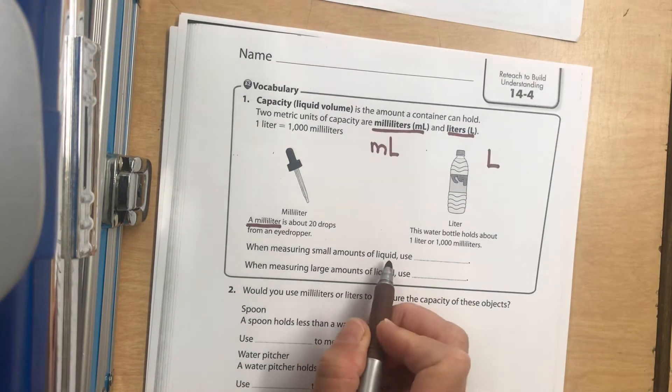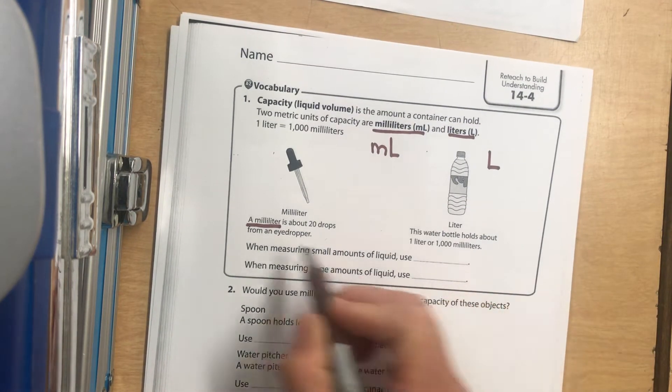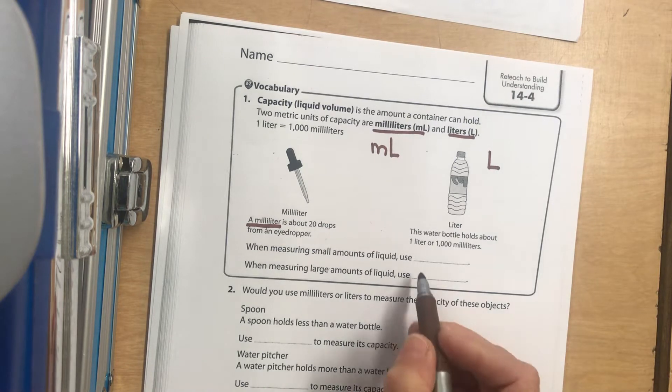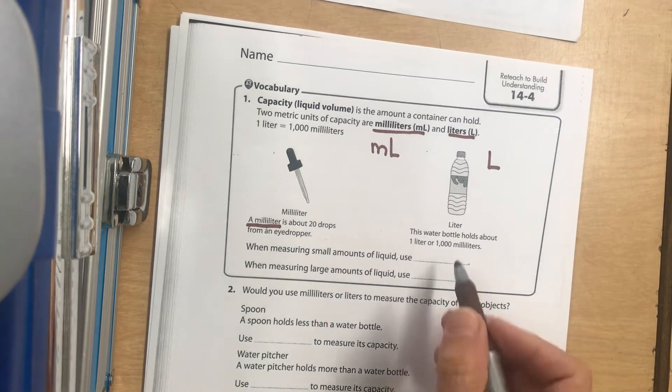So if measuring small amounts of liquid, would you use a milliliter or a liter? Like if you were trying to measure out the amount of cough syrup to take or the amount of drops to put in your ear or something like that, would you use milliliters or would you use liters?